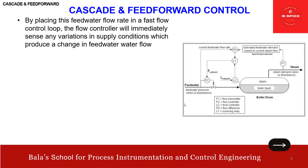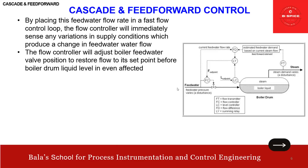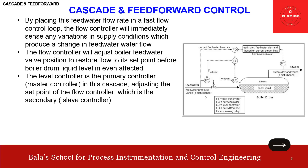By placing the feed water flow rate in the fast loop, the flow controller will immediately sense any variations in supply conditions that produce a change in feed water flow. The flow controller will adjust the boiler feed water valve position to restore it to set point before the boiler drum liquid level is even affected. The level controller is the primary (master) controller, adjusting the set point of the flow controller, which is the secondary (slave) controller.